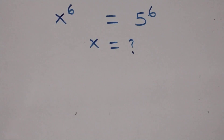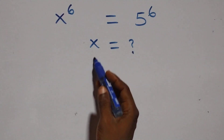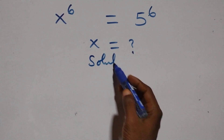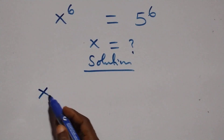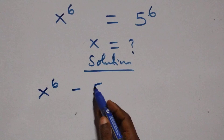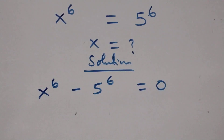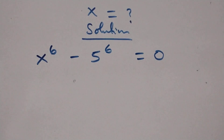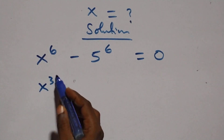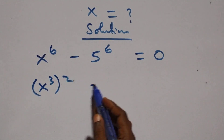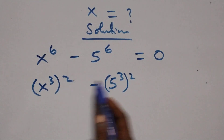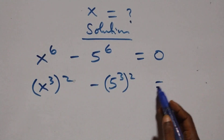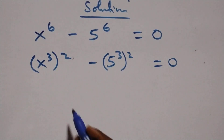Hello, you are welcome. Here we solve a nice exponential equation. We take 5 raised to power 6 to the left hand side, and we have x raised to power 6 minus 5 raised to power 6 equals 0. That is, we can rewrite this as x raised to power 3, raised to power 2, minus 5 raised to power 3, raised to power 2, since 2 times 3 gives us 6, equals 0.